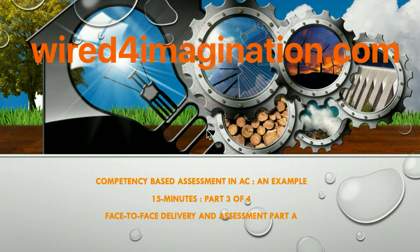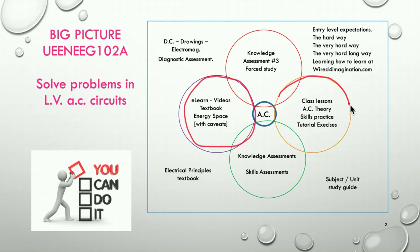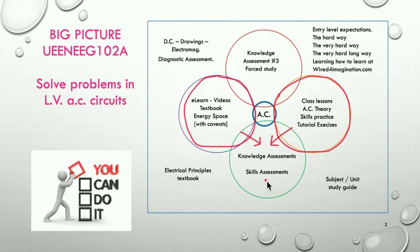I've called this part A because it has two very distinct sections. Here in particular, I'm looking at the delivery model that I use, which is covered by this purple circle, and then the assessment, which is covered by this orange circle. And then how all that feeds into how we're going to do this competency-based assessment, whether it's a knowledge assessment or a skills assessment. I call this part A as we look at the first section of how we go about doing that.